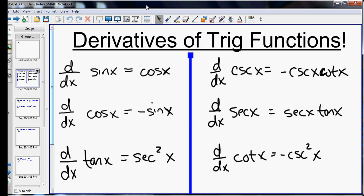So the only difference between secant and cosecant is there's a negative sign in the answer for cosecant, and it goes from secant x tangent x to cosecant x cotangent x.